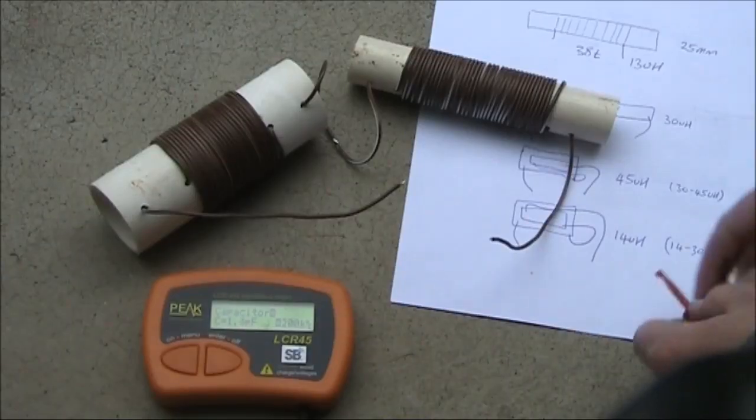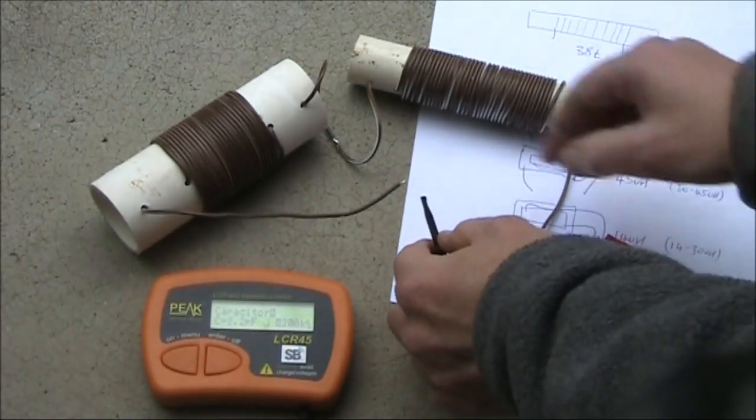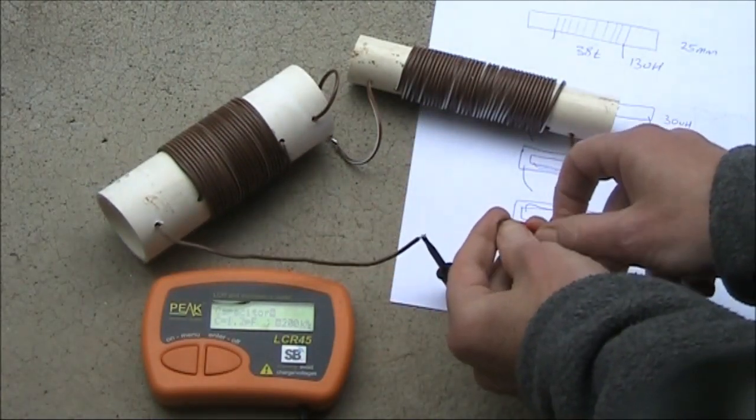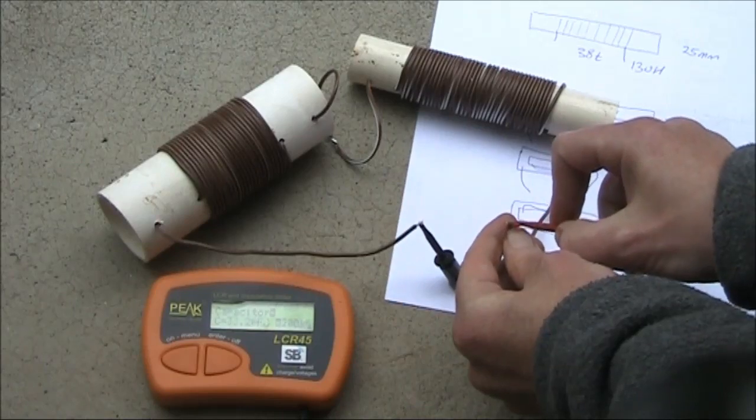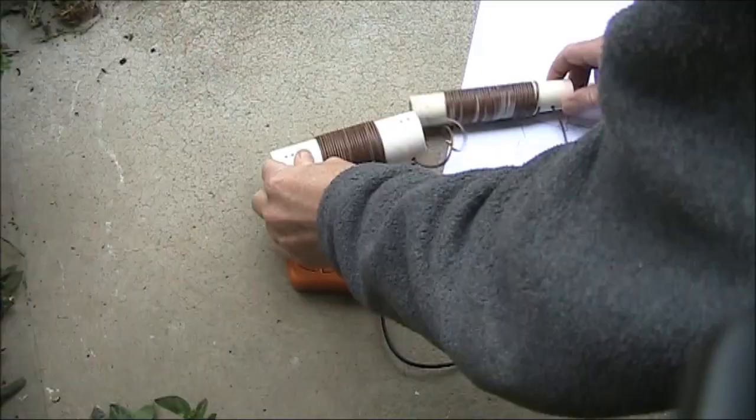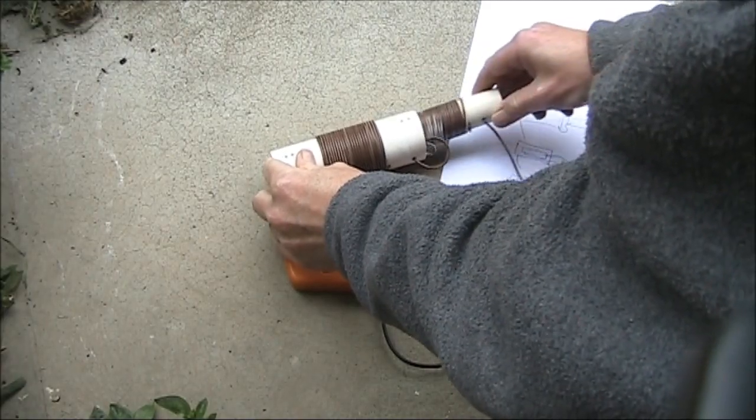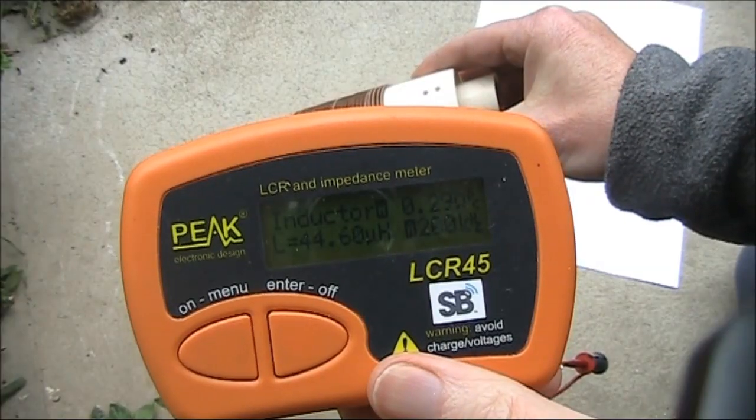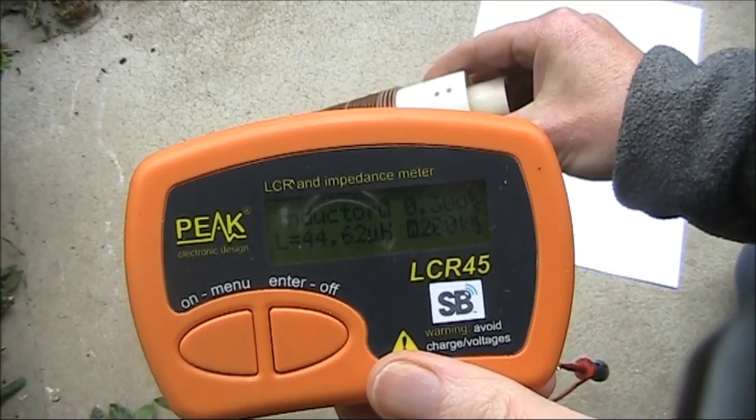The interesting thing is what happens when you slide one inductor inside the other. It's different depending on the orientation of the smaller inductor relative to the larger inductor. When I slide it all the way in like this, the inductance increases up to nearly 45 microhenry.